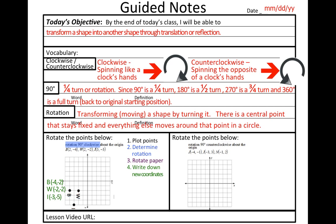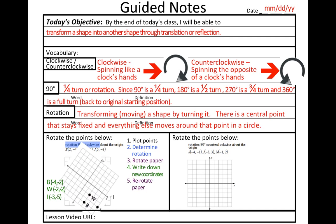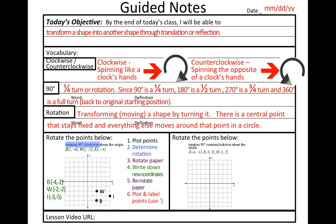B, W, and I. Rerotate the paper back around. And plot and label those new points. So B, W, and I. That's what the rotation would look like. If I took that gray triangle and rotated it 90 degrees around the origin, it would look like that red triangle.